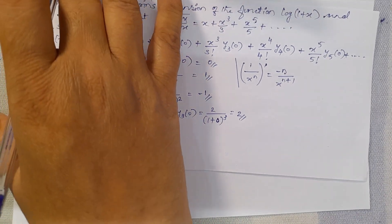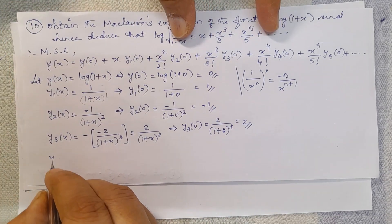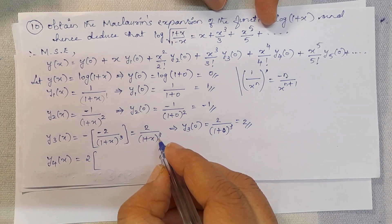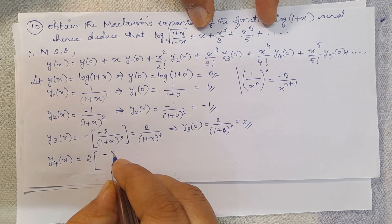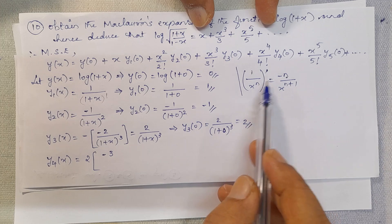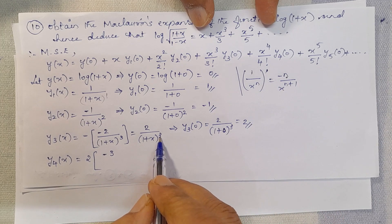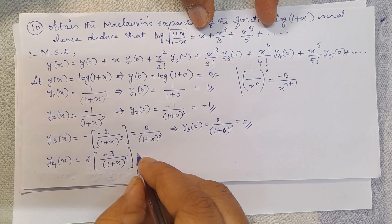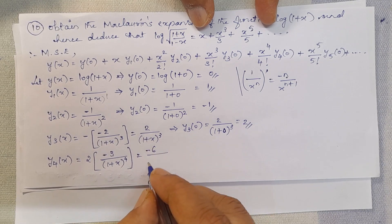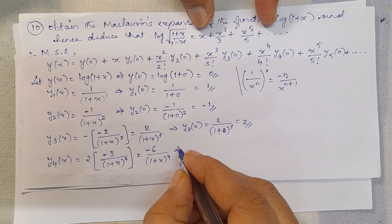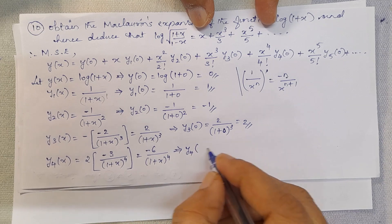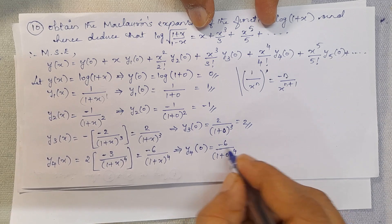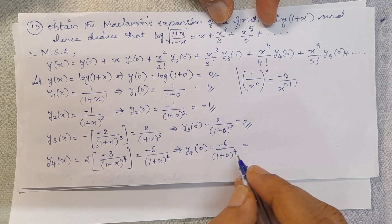Next, find y4(0). y4(x) is the differentiation of y3(x) = 2/(1+x)³. Here n = 3, so we get 2·(-3)/(1+x)⁴ = -6/(1+x)⁴. So y4(0) = -6/(1 + 0)⁴ = -6/1 = -6.